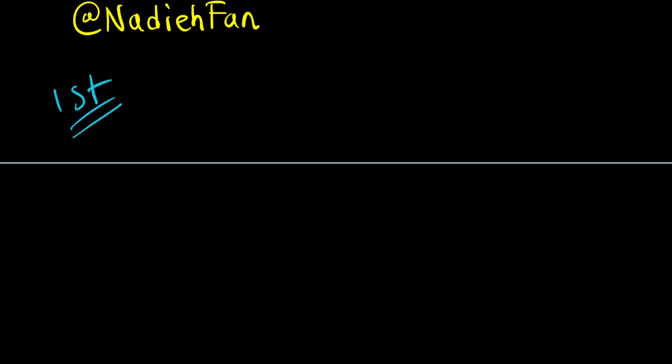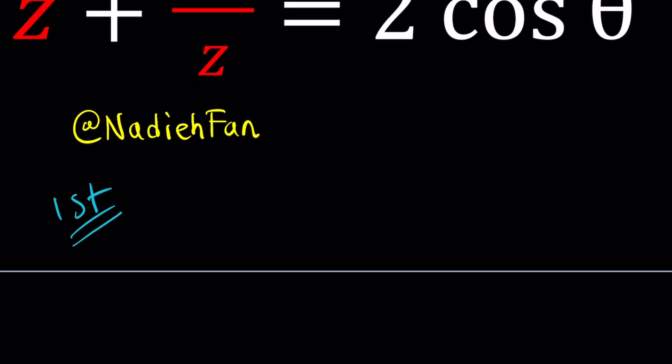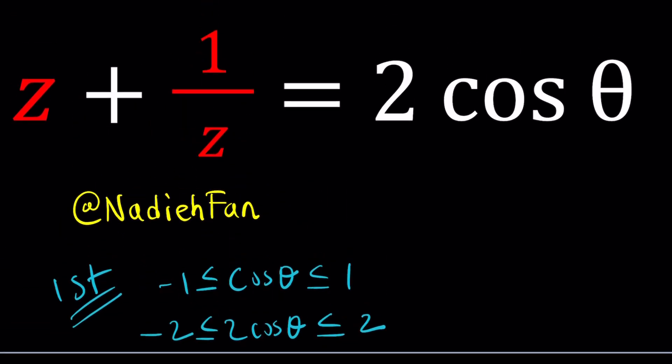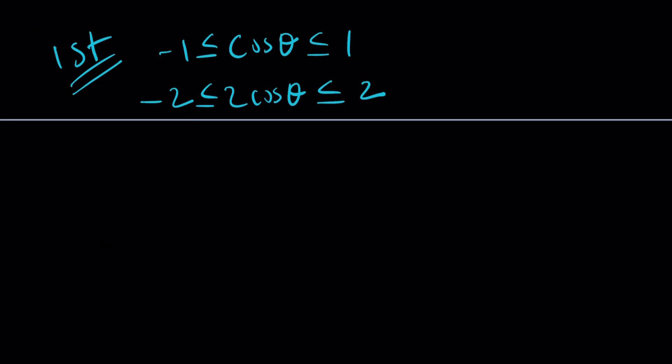For my first method, first of all I'm going to take a look at the value of cosine theta. If theta is real, then cosine theta is always going to be between negative 1 and 1 inclusive. From here I can multiply both sides by 2 and notice that 2 cosine theta is equal to z plus 1 over z.